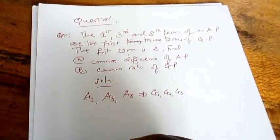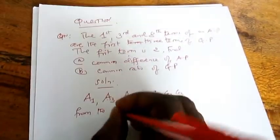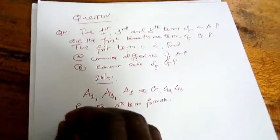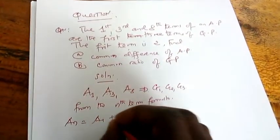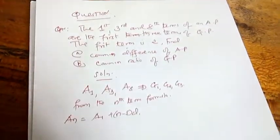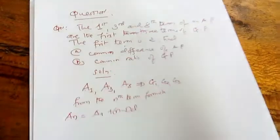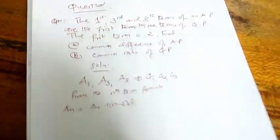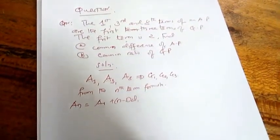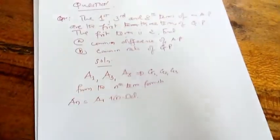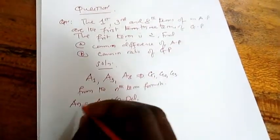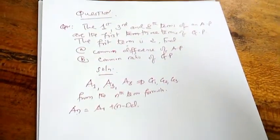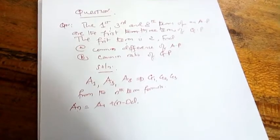In arithmetic progression, we denote it as A. A1 means first term, A2 is second term, A3 is third term, and so on. We start: we have been given the first term, let it be A1. And we have also been given the third term, A3. The other term we've been given is eighth term, so we write A8.